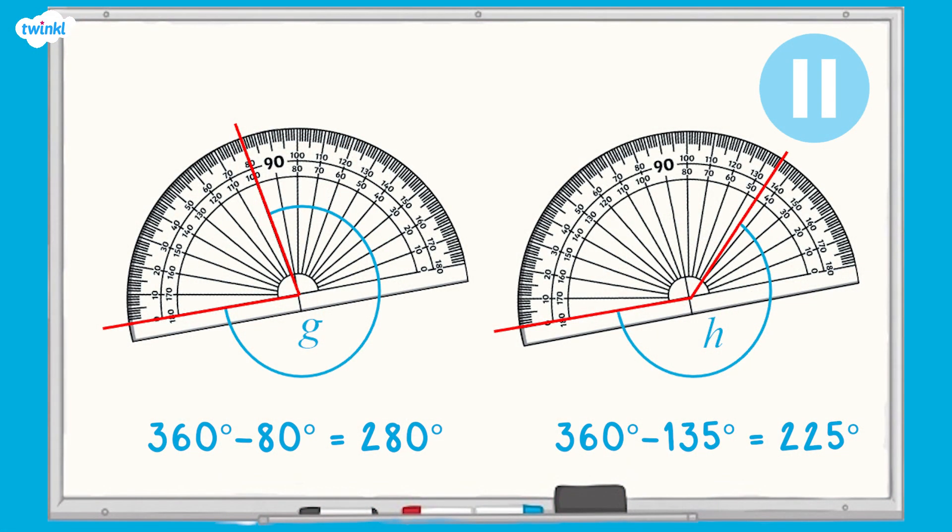Angle G is 280 degrees because 360 degrees minus 80 degrees equals 280 degrees. Angle H is 225 degrees because 360 degrees minus 135 degrees is 225 degrees.